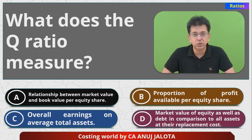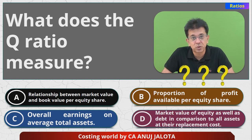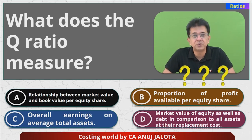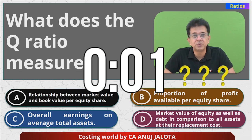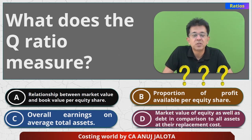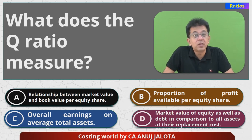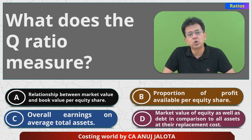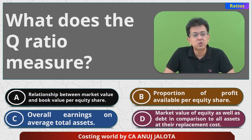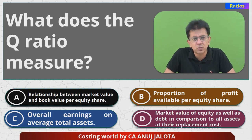If you know the answer, this is the right time to comment. So first of all, what do you mean by Q ratio? The Q ratio was made by a guy called James Tobin, so this ratio is also called Tobin's Q — Tobin's Q ratio.